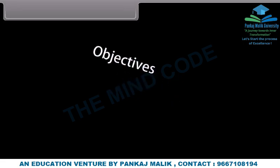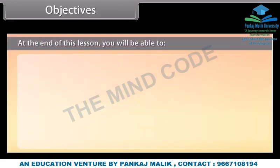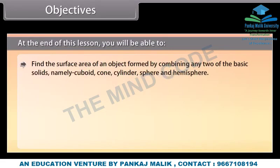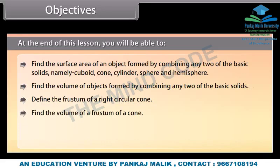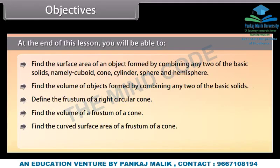Objectives: At the end of this lesson, you'll be able to find the surface area of an object formed by combining any two of the basic solids — namely cuboid, cone, cylinder, sphere, and hemisphere. Find the volume of objects formed by combining any two of the basic solids. Define the frustum of a right circular cone. Find the volume, curved surface area, and total surface area of a frustum of a cone.